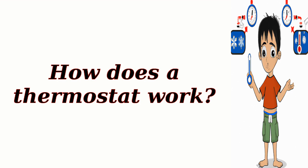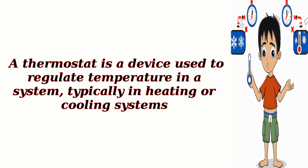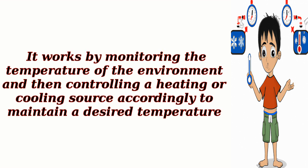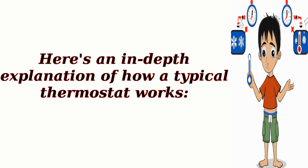How does a thermostat work? A thermostat is a device used to regulate temperature in a system, typically in heating or cooling systems. It works by monitoring the temperature of the environment and then controlling a heating or cooling source accordingly to maintain a desired temperature. Here's an in-depth explanation of how a typical thermostat works.